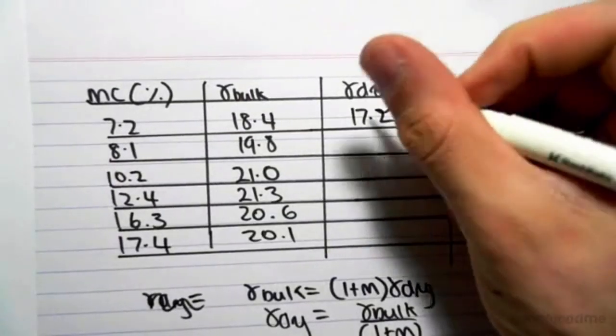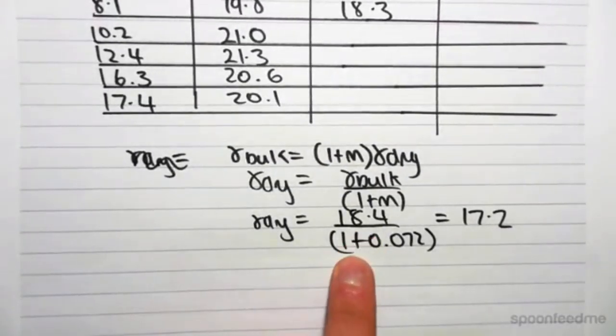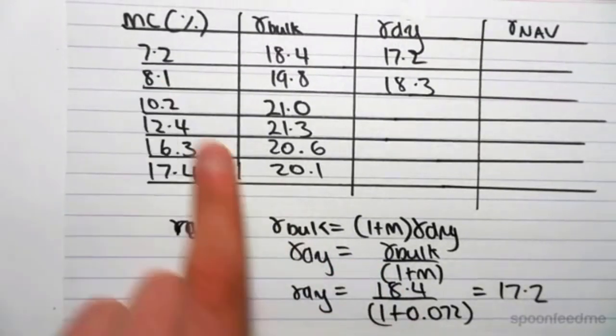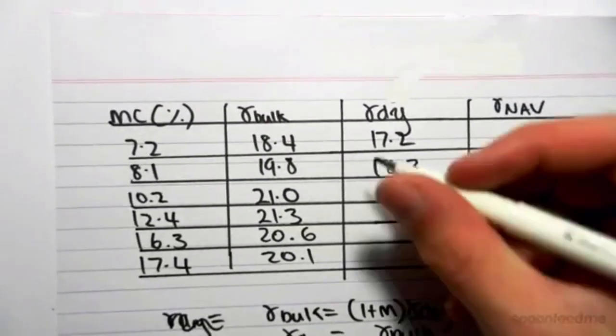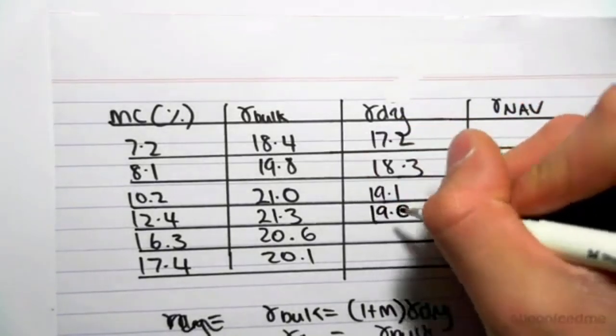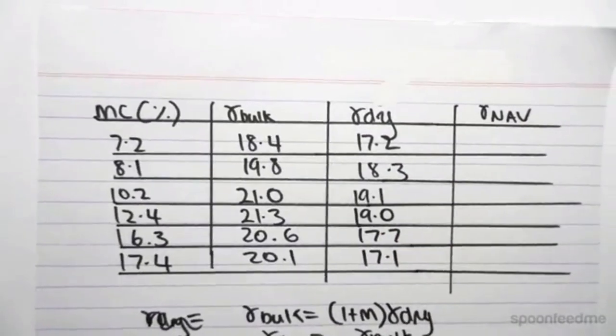I've calculated all these values already, so I'm just going to fill them in, you guys can do it in your own time. So just to show you, 18.4 on one plus 0.072, 7.2% moisture content equals 17.2. Just filling in all the rest of these values, that's 17.1.